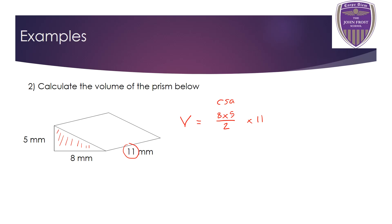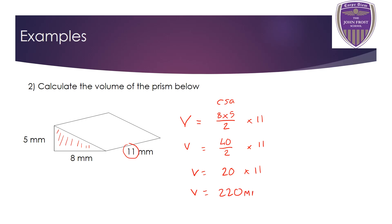Working out the area: 8 times 5 is 40, divided by 2 gives 20. Multiplying 20 by 11 gives a volume of 220. All measurements on the diagram are in millimeters, so the volume is 220 millimeters cubed.